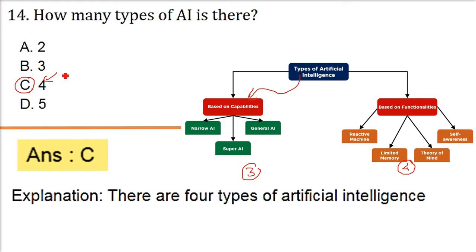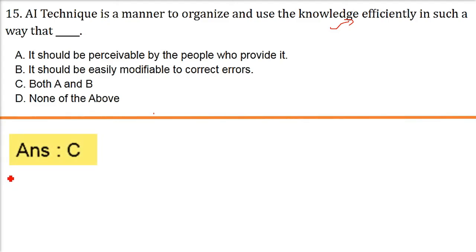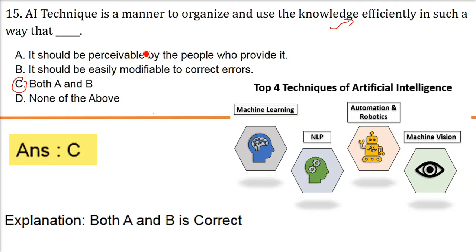There are four types of artificial intelligence. AI technique is a manner to organize and use the knowledge efficiently in such a way that. So we are talking about AI technique. Organize and use the knowledge efficiently. So how can any of the AI technique employ, use this knowledge efficiently, powerfully, in a way that is perceivable and modifiable. So the answer is both A and B is correct. So whenever we are talking about knowledge being used efficiently in an organized manner, the people who are using it or who have employed it, they must be able to perceive it. Also, any problem is there, it is modified. It can be modified also. The correction of errors can be done. If I just take an example of artificial neural network, for any input, there will be output. And their output may be correct, incorrect. So we change the weight and biases.